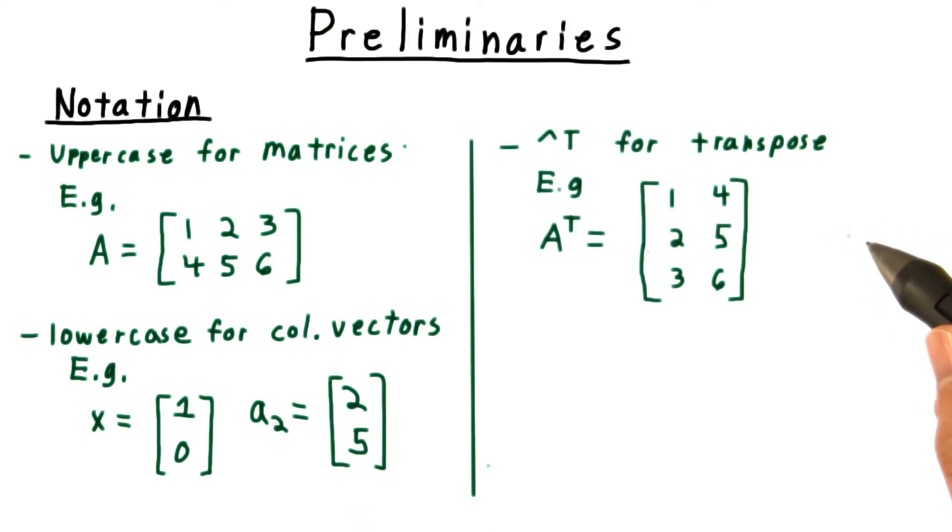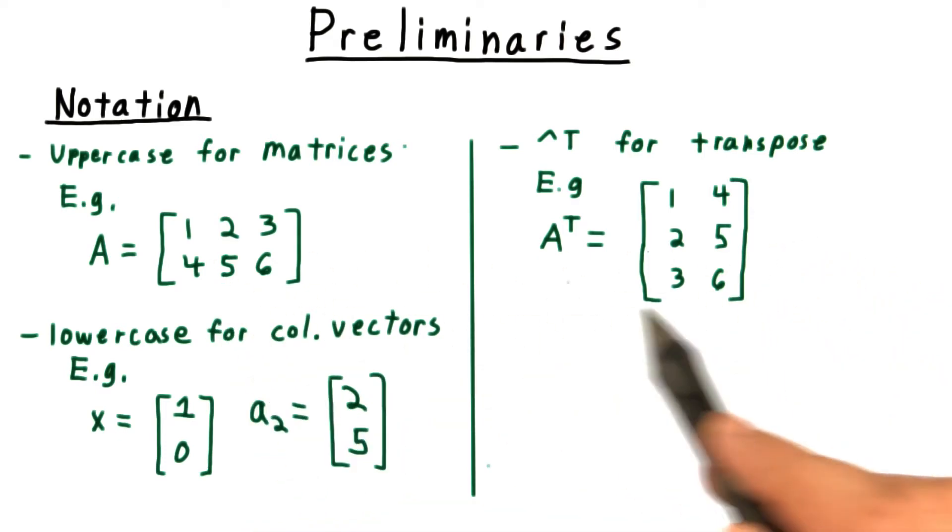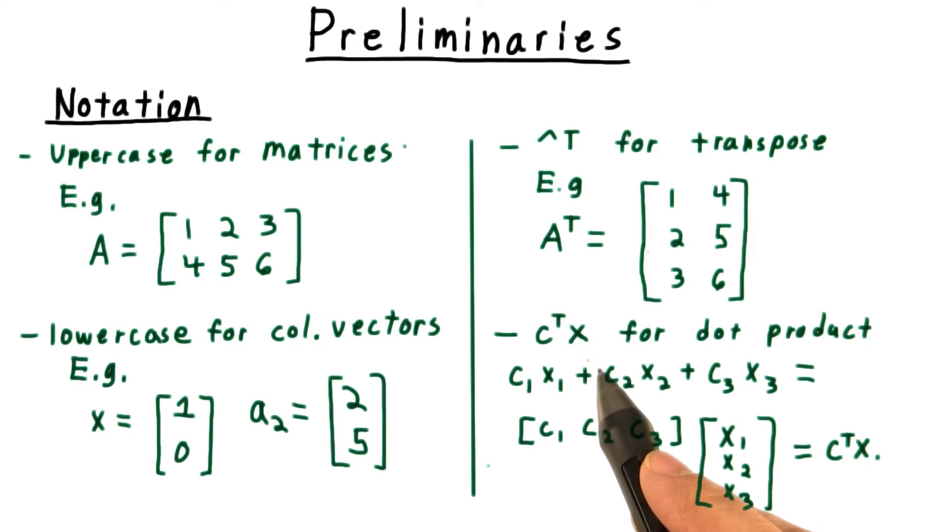We indicate the transpose of a matrix by giving it a t in the superscript. And this just reverses the meaning of the rows and columns. This notation then allows us to use C transpose X for the dot product.